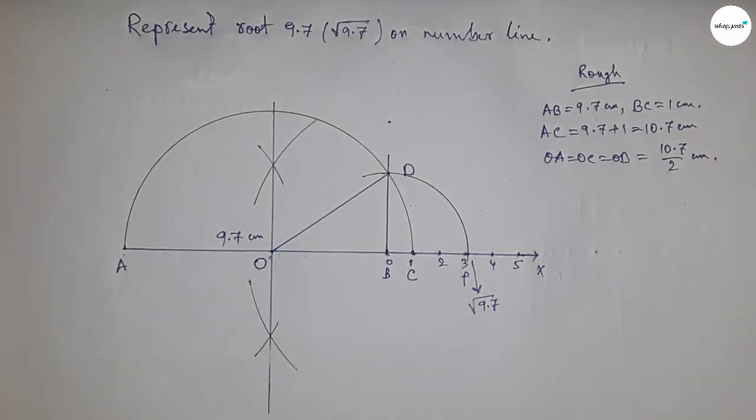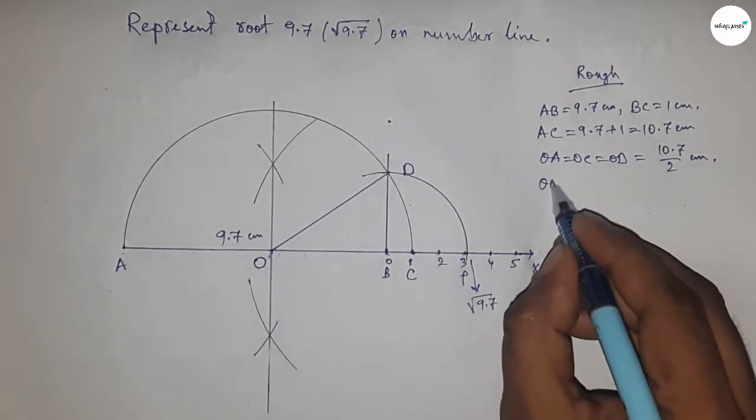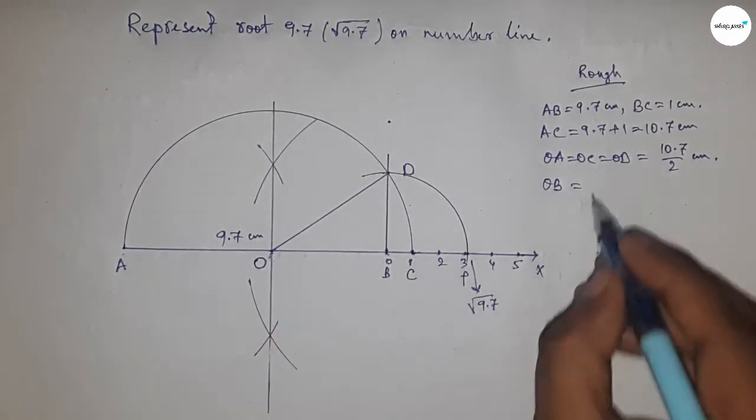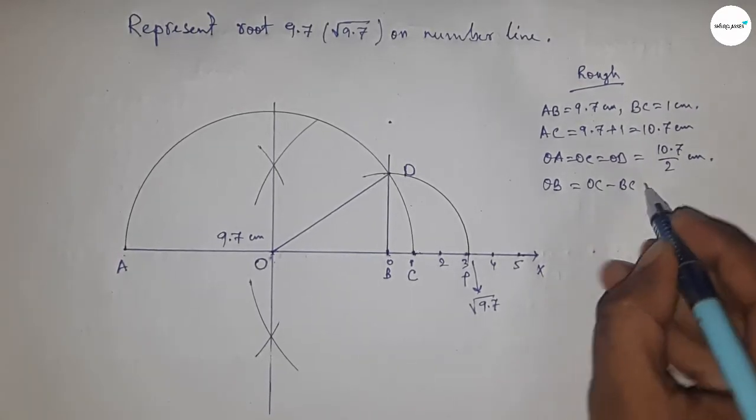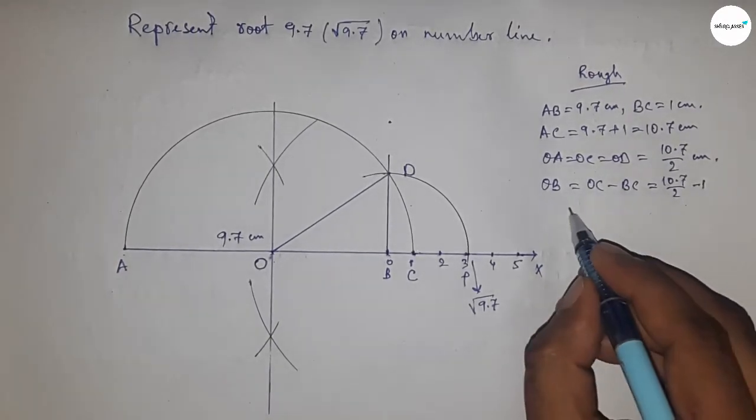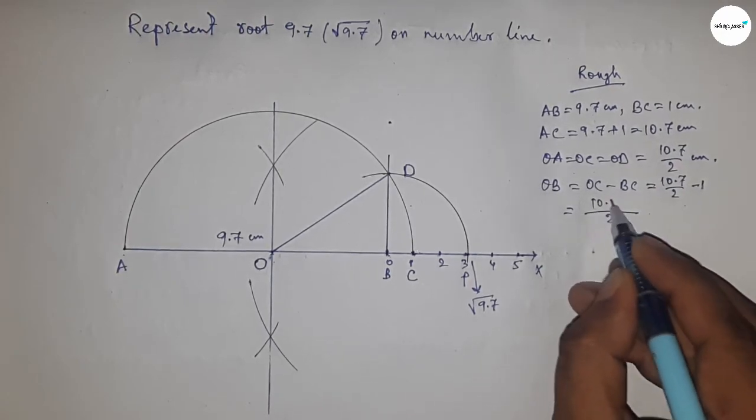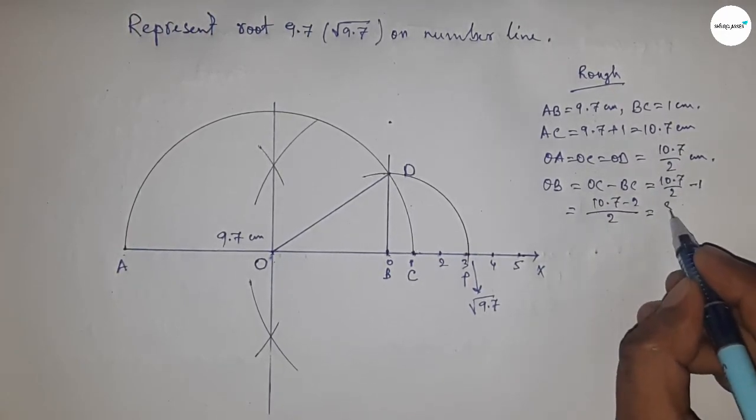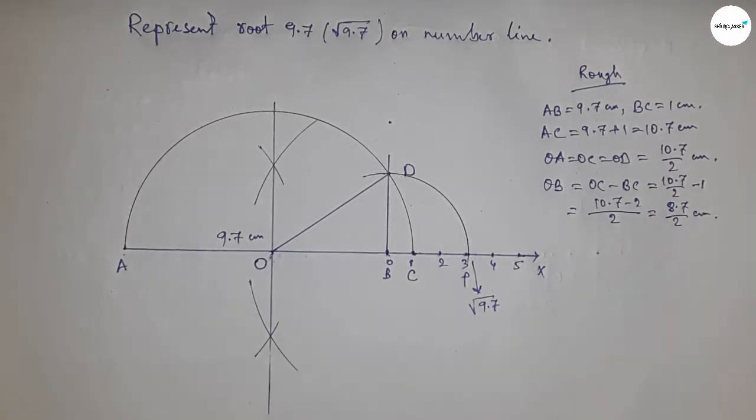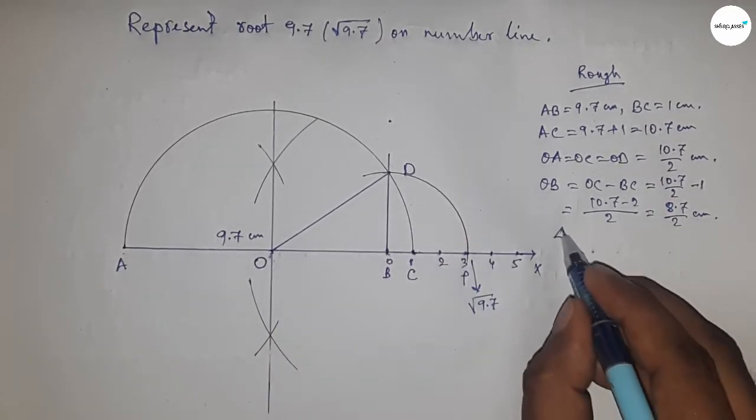Distance OB equals OC minus BC. Putting the values and calculating, this gives 8.7 by 2 centimeters. From right angle triangle OBD, we can write BD equals the square root of OD squared minus OB squared by the Pythagorean theorem.